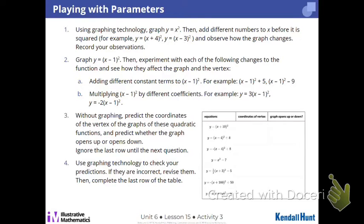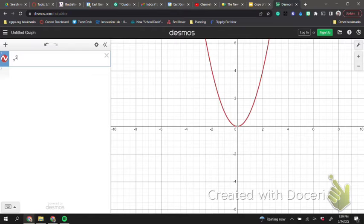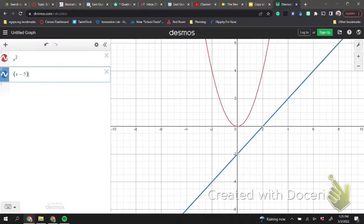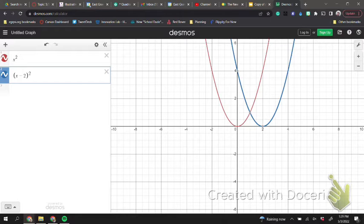Look for what's happening. For task 1, you're comparing x squared to the quadratic where we have something like x minus 2 squared. So what happened to my vertex? To the right.